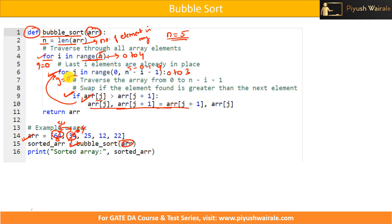After swapping, 34 moves to position 0 and 64 to position 1. Next, j equals 1: we check if position 1 (64) is greater than position 2 (25) — yes, so we swap again. Then j equals 2: 64 is greater than 12, so we swap again. In this way 64 bubbles to the right.